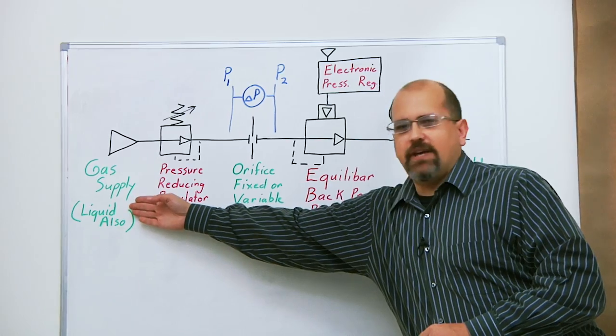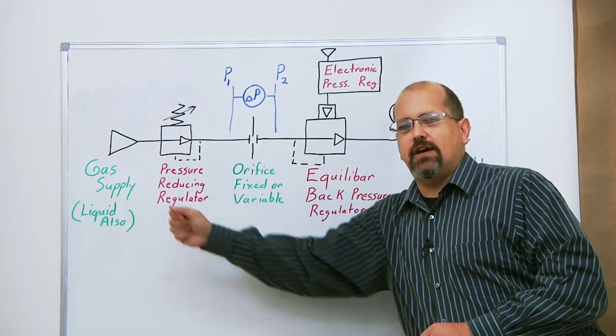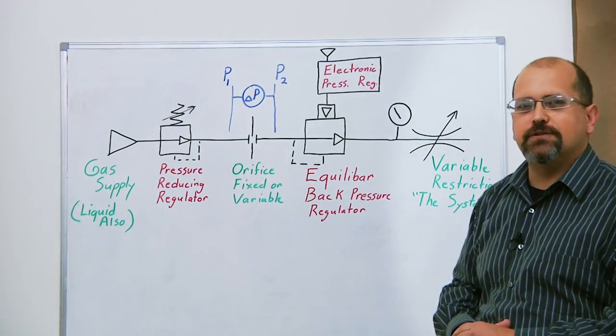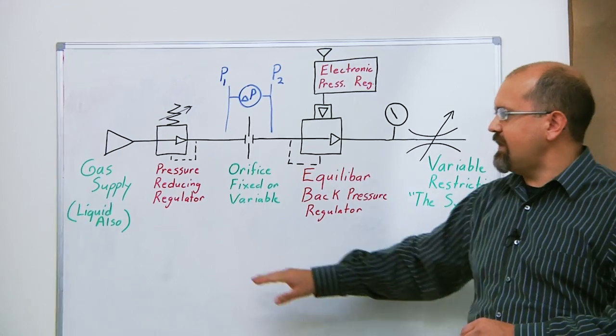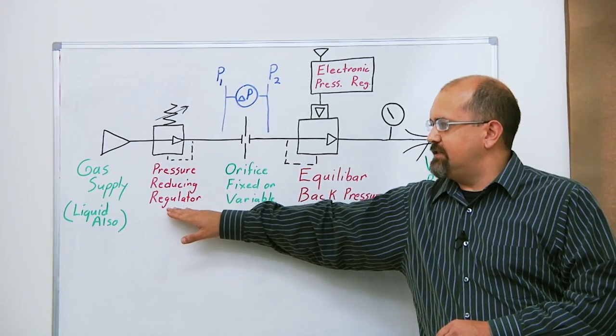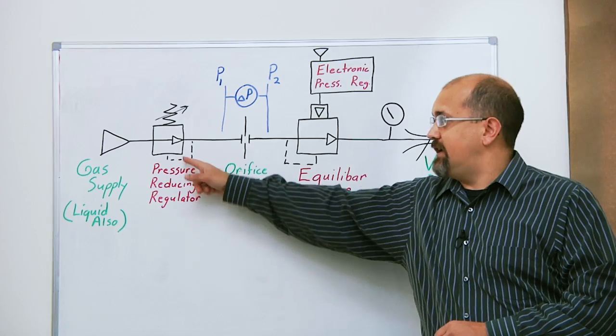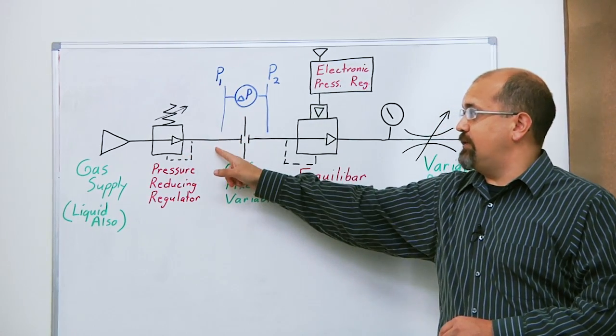We'll start on this side. We have our gas supply pressure coming in. Please note that this could also be a liquid supply pressure coming in. The first thing we're going to do is set the pressure using a pressure reducing regulator here, which sets the P1 pressure.